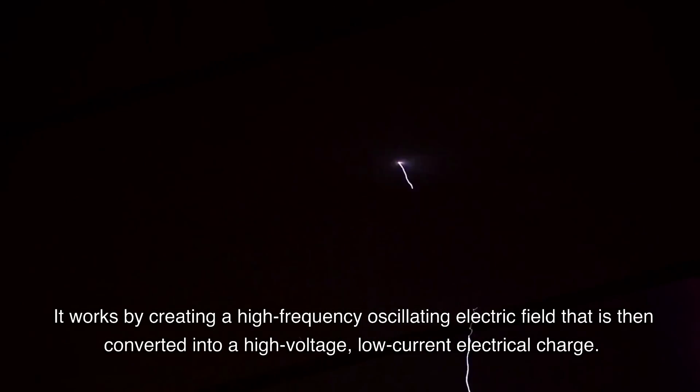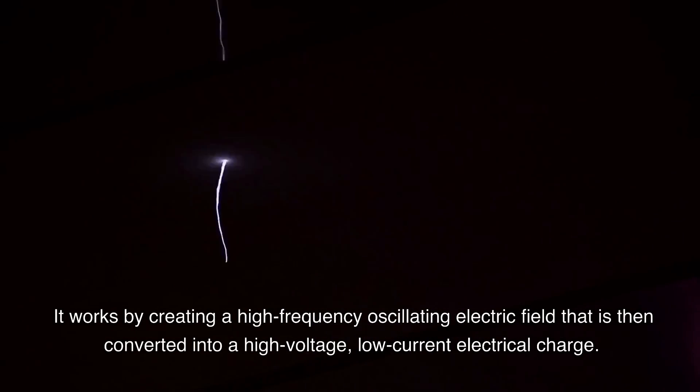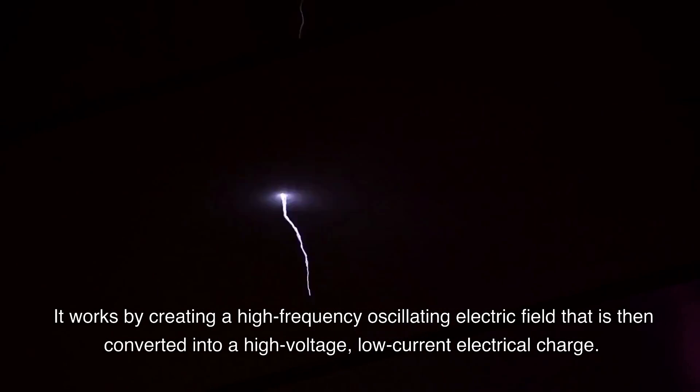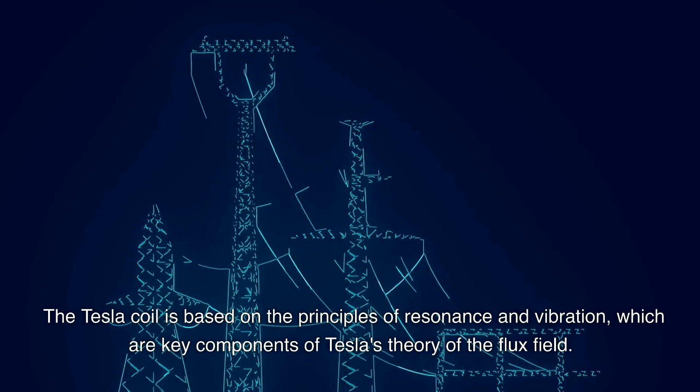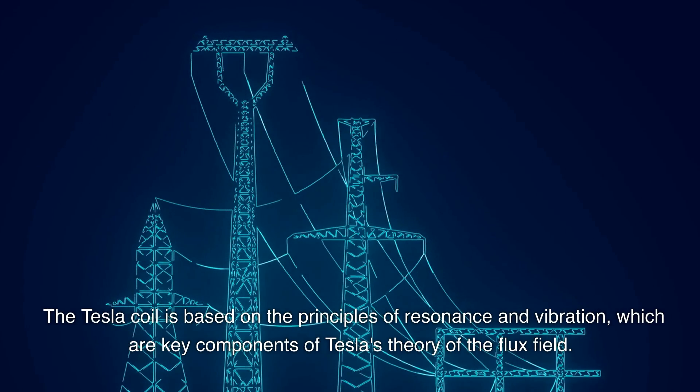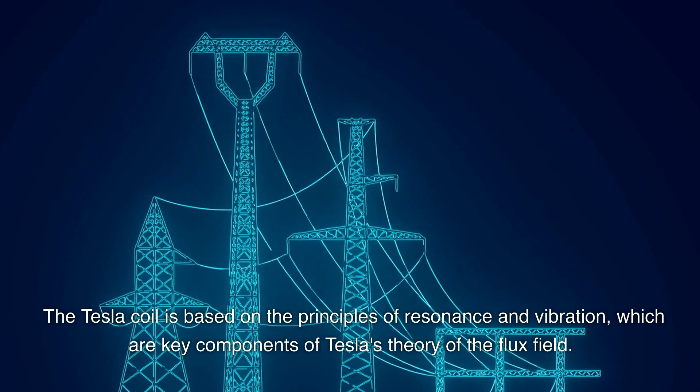It works by creating a high frequency oscillating electric field that is then converted into a high voltage, low current electrical charge. The Tesla coil is based on the principles of resonance and vibration, which are key components of Tesla's theory of the flux field.